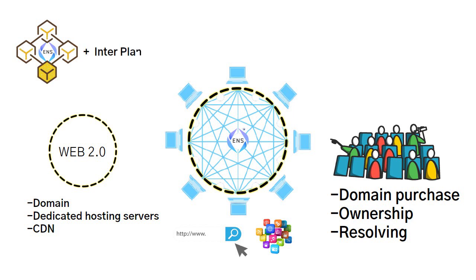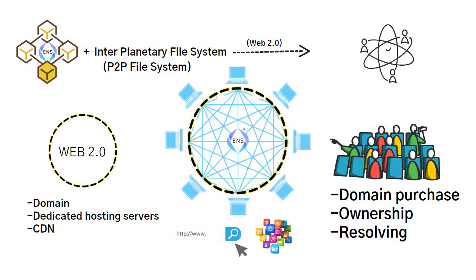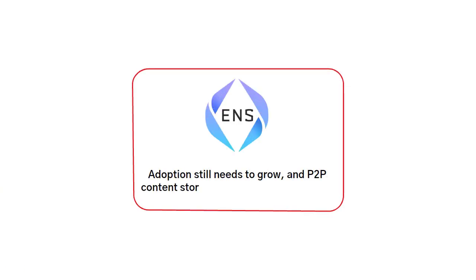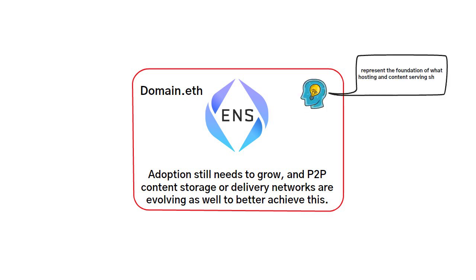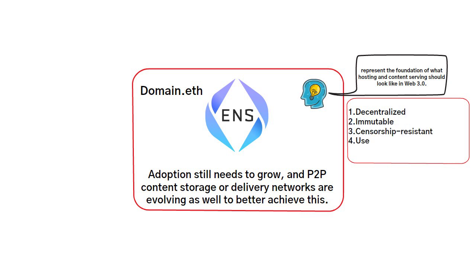Another interesting part is that when combined with the Interplanetary File System (IPFS), which is a distributed P2P file system, ENS can begin to open up the windows needed to get rid of the centralized, censorship-prone DNS features of Web 2.0, making decentralized P2P censorship-resistant websites and apps possible. ENS domains definitely represent the foundation of what hosting and content serving should look like in Web 3.0, because unlike DNS they are decentralized, immutable, censorship-resistant, and user-owned.